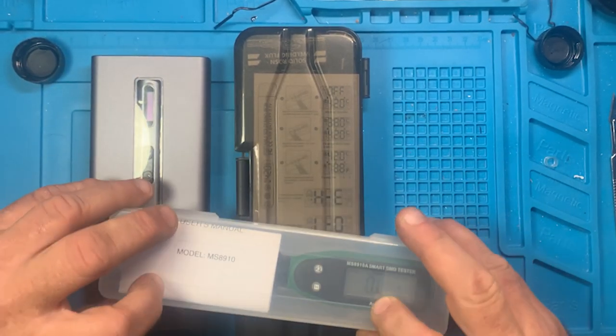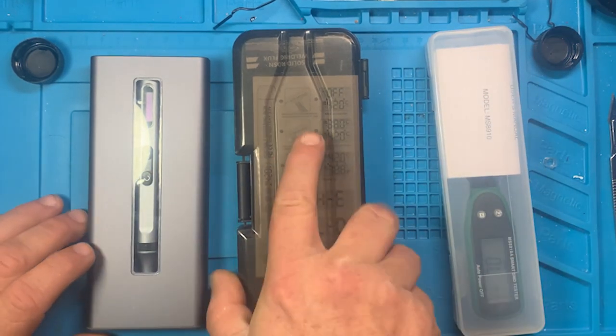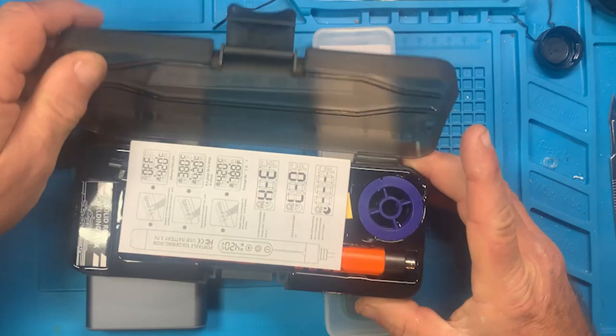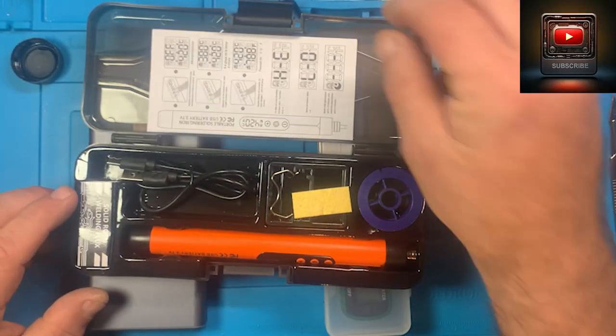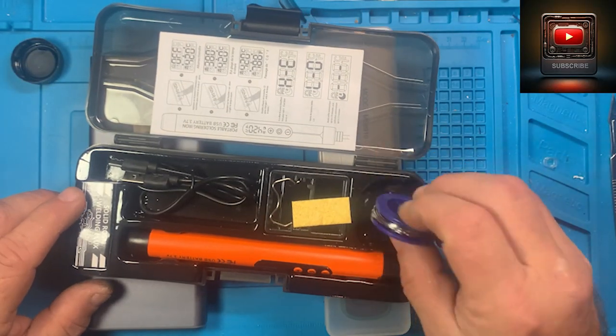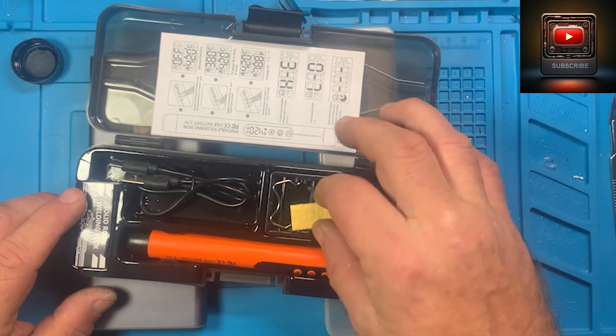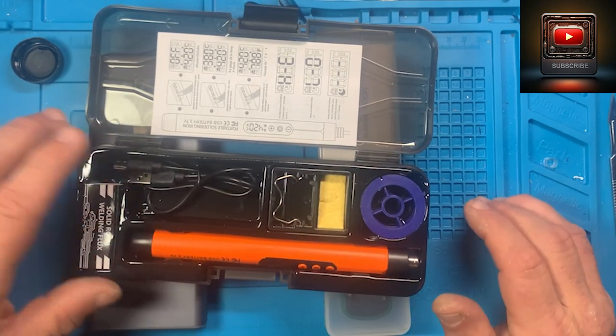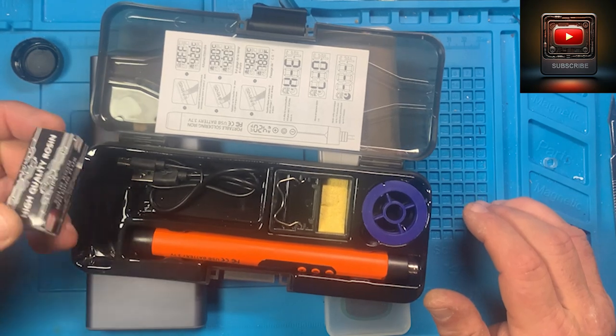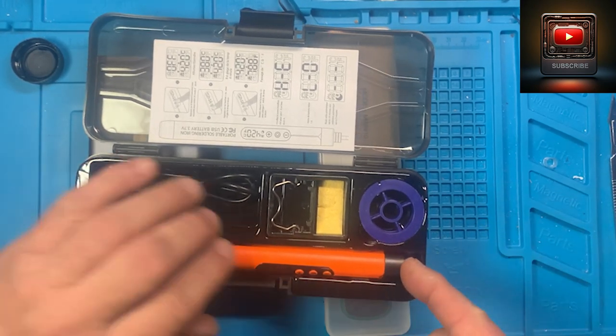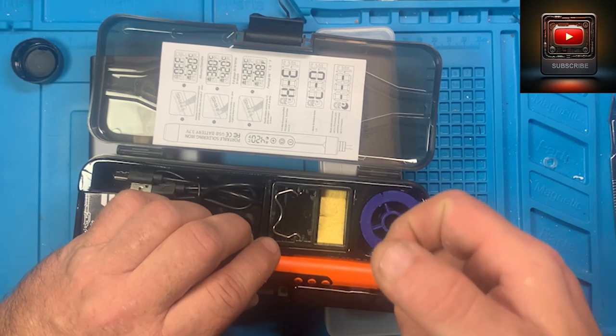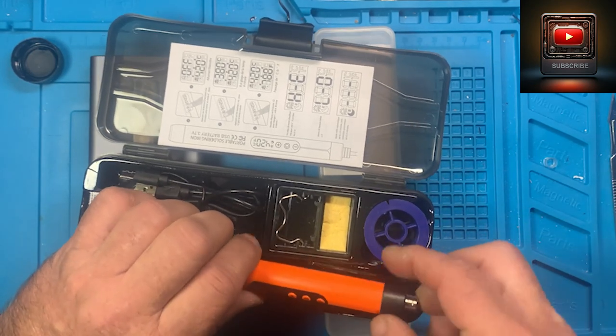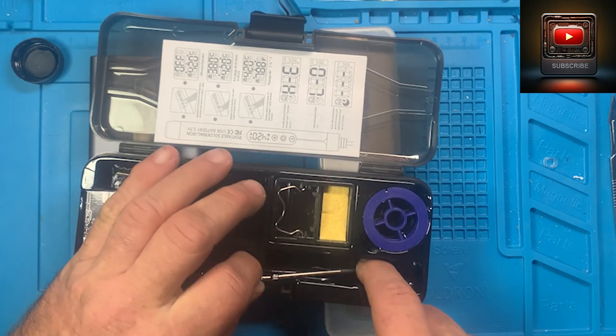This is the tweezer. The soldering iron comes with a little bit of solder, sponge holder, the power cable, and some hard resin. With the soldering iron you have a tip right here.